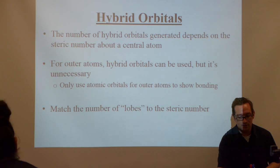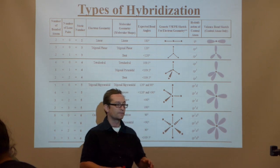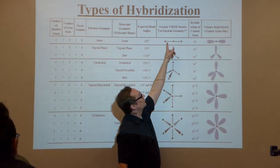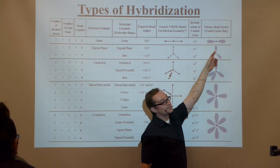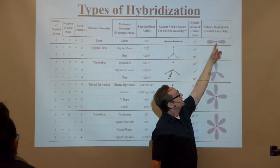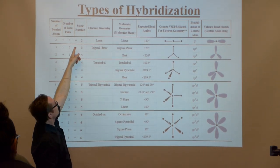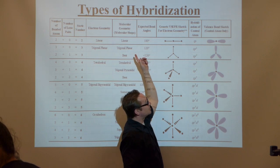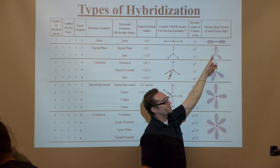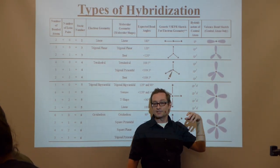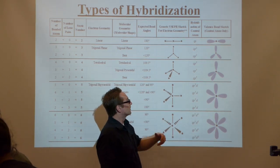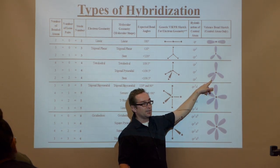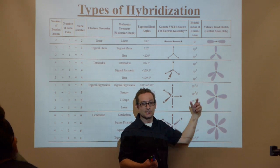We're going to do something called matching the lobe to the steric number. Here's your full VSEPR chart with Valence Bond theory added on. Notice how with each electron geometry shape, you get that many lobes. The central atom is going to have two lobes bonded to it, which matches the steric number of two. Steric number two gives two lobes; steric number three — trigonal planar — makes three lobes. Each lobe is a hybrid orbital — a mixture of S and P.